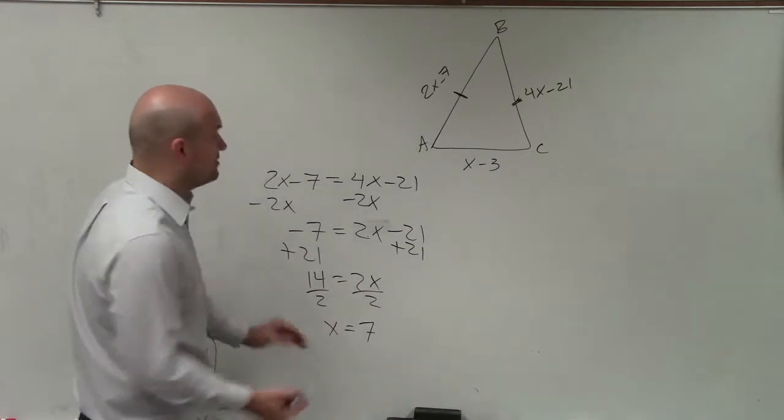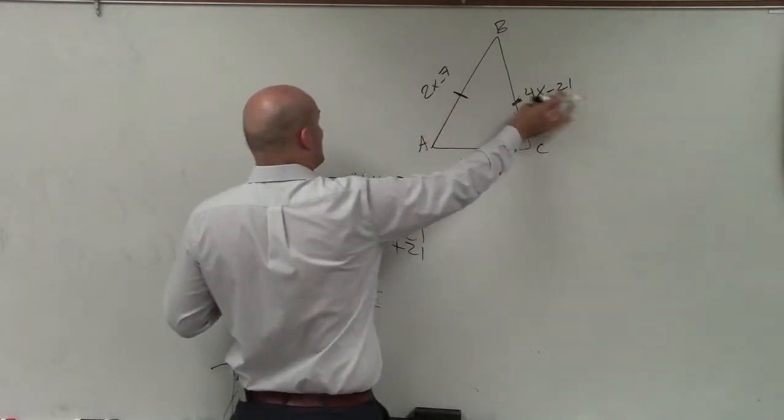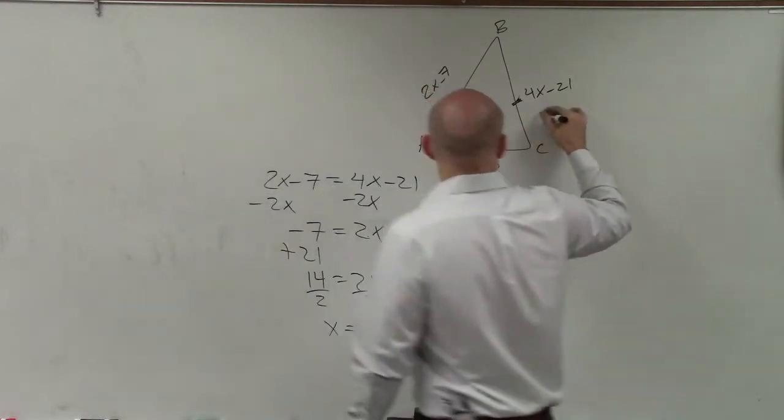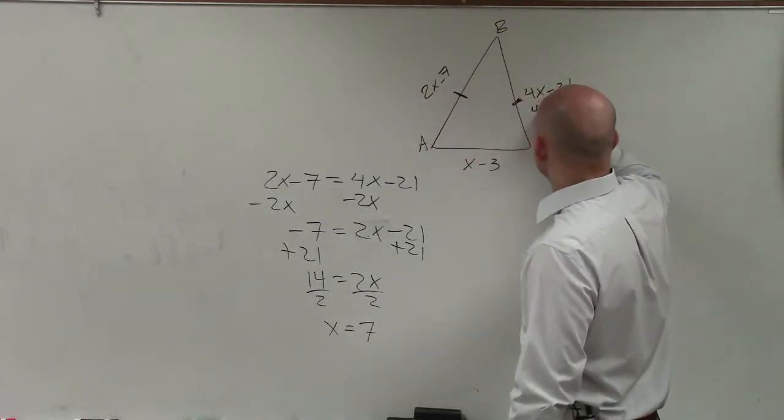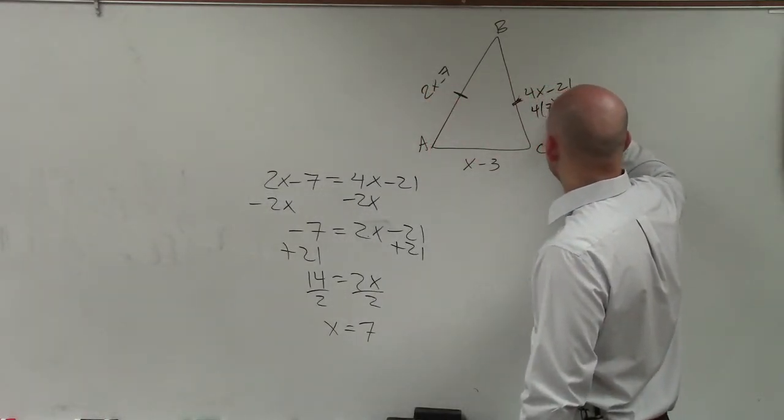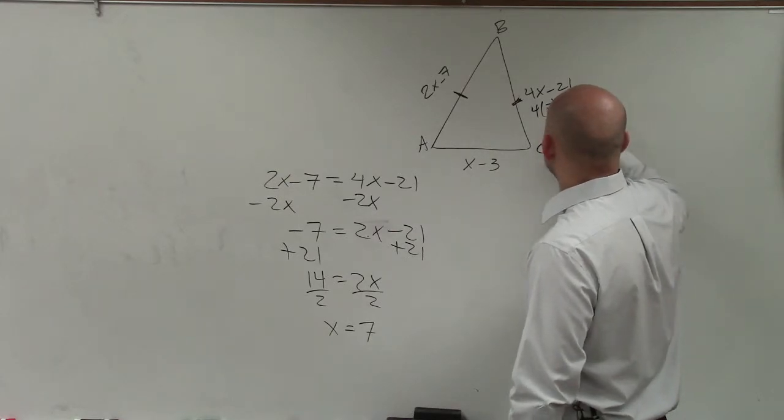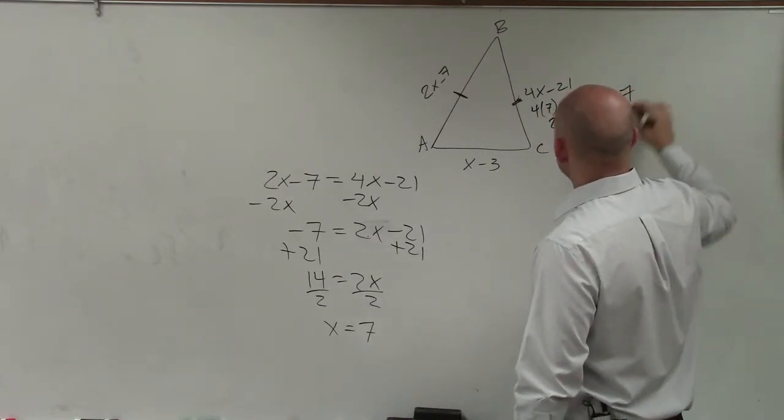So therefore, all I need to do is find the measure of one of these sides, because I know the other side is going to be the same. So let's just plug in 7 for this one. So 4 times 7 minus 21 equals 28 minus 21, which equals 7.